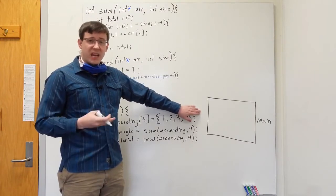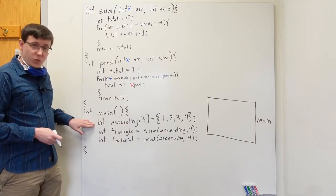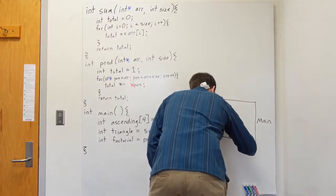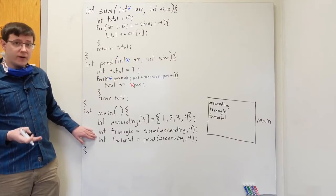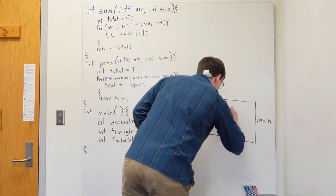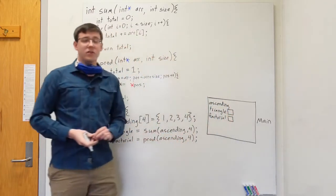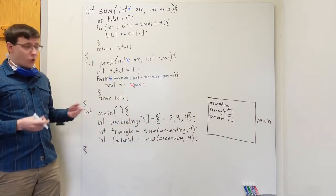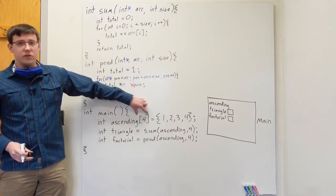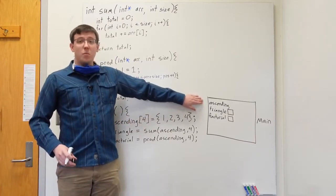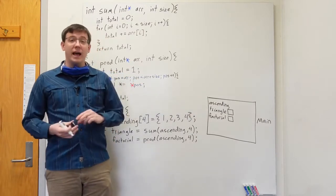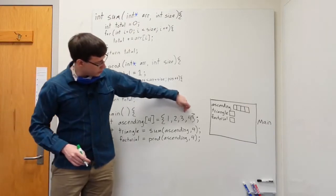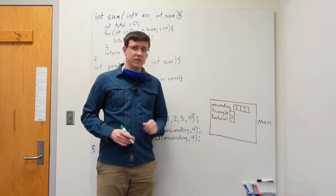As always, the stack frame for main sits on the bottom of our stack diagram. In main, we have three variables: ascending, triangle, and factorial. Triangle and factorial are both integer variables, so we show them as having a simple box in the stack frame to store an integer value. Whereas the variable ascending is an array variable, and the size of that array is four, so we know that there are boxes for storing four integers for the elements of this array. When we execute the first line of main, the values 1, 2, 3, 4 are assigned into the four elements of this array.